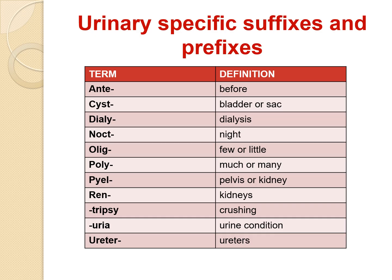The term 'anti' indicates before. 'Cyst' indicates bladder or sac. 'Dialy' indicates dialysis. 'Noct' indicates night. 'Olig' indicates few or little, as in the case of oliguria. 'Poly' indicates much or many, as in the case of polyuria. 'Pyle' indicates pelvis or kidney, relating to pelvis or kidney.